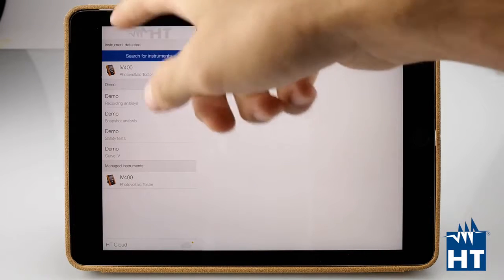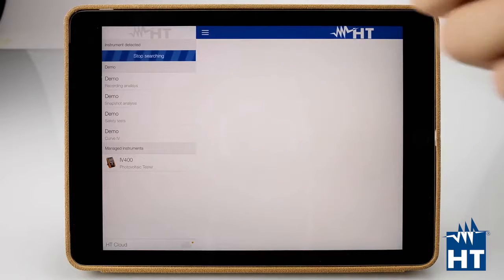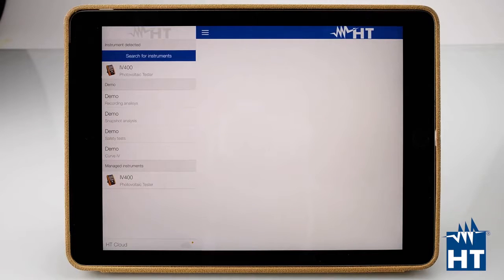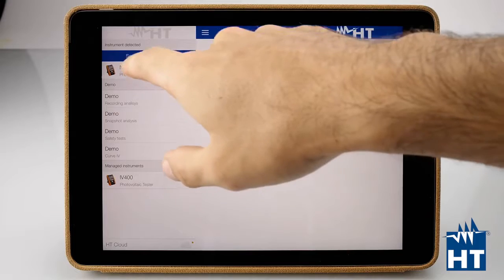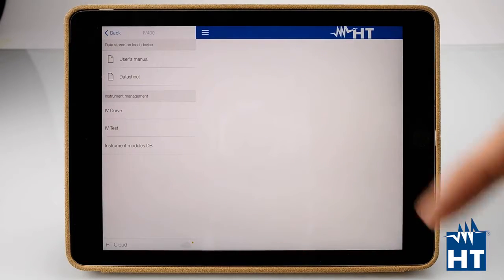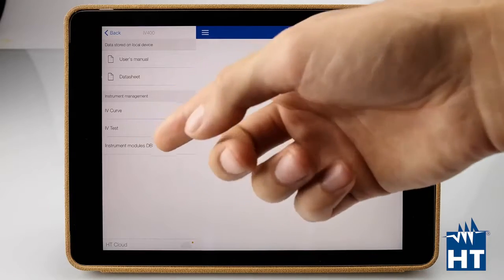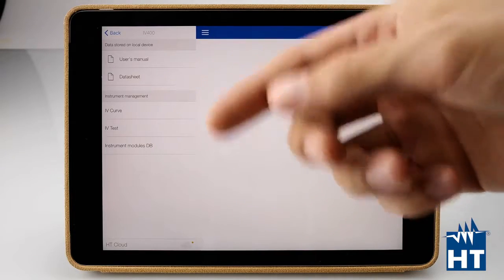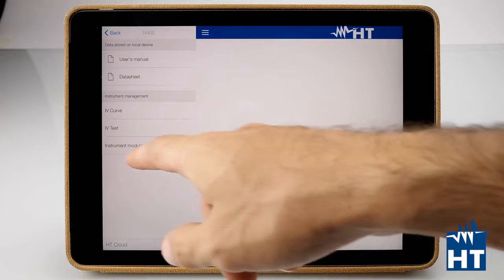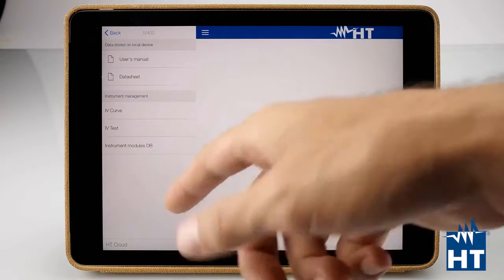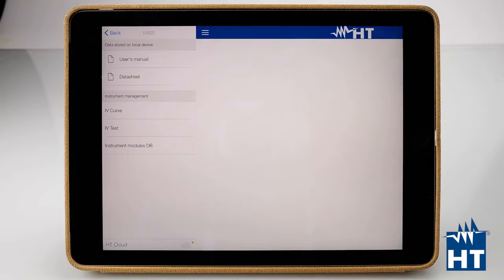Okay, instrument detected. We just press here to find the instrument. Live instruments. Then we press here and we can find the I-V curve test, I-V test, which is a fast check of VOC and ISC. And then the instrument modules, because we can manage the database of the modules directly from the iPad.